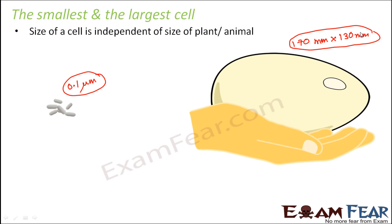It is not necessary that since bacteria is a small organism, the cell of a bacterium is small because of that. It is all about — you should not think that because an elephant is bigger than a mouse, the elephant will have larger cells than that of a mouse. It is not like that — cell size is independent of the size of the plant or the animal.